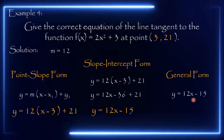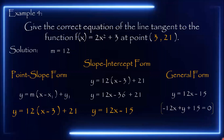For the general form, we use y = 12x minus 15 and transpose all right-side terms to the left, equating to 0. Always change the sign when transposing: 12x becomes negative 12x, then plus y, and negative 15 becomes positive 15, equals 0. Since the coefficient of x is negative, we multiply all terms by negative 1, giving 12x minus y minus 15 equals 0. This is the general form. Thank you, that's it for today's presentation. May the odds be ever in your favor.